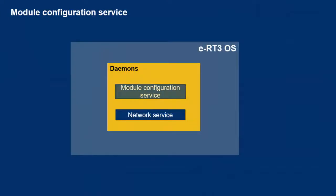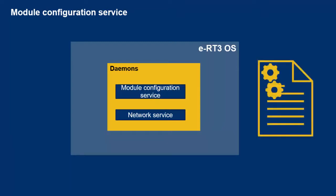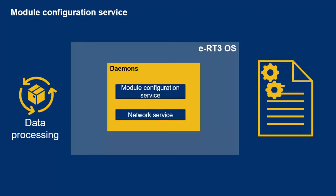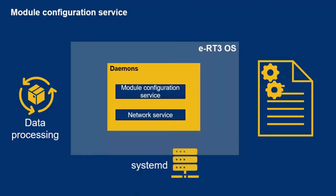You can automatically configure the features of a module by using the IO module configuration service. This service uses a settings file which you can modify to configure the module, so you need not write programs for configuring modules and can instead focus on creating programs dedicated to data processing. The module configuration service is provided as a daemon managed by systemd, a utility platform for daemon management designed for Linux. Using the systemctl command you can configure services to start or stop and whether they should run automatically on startup.